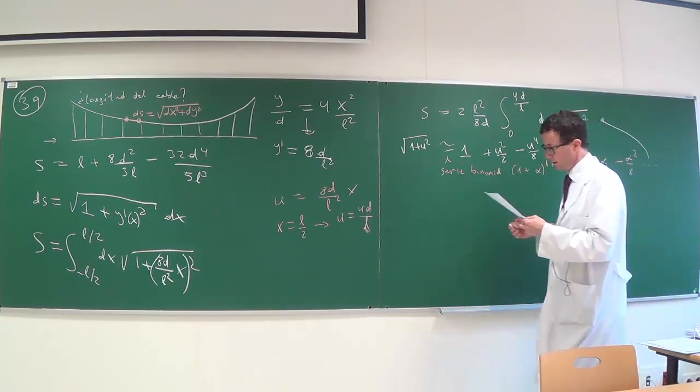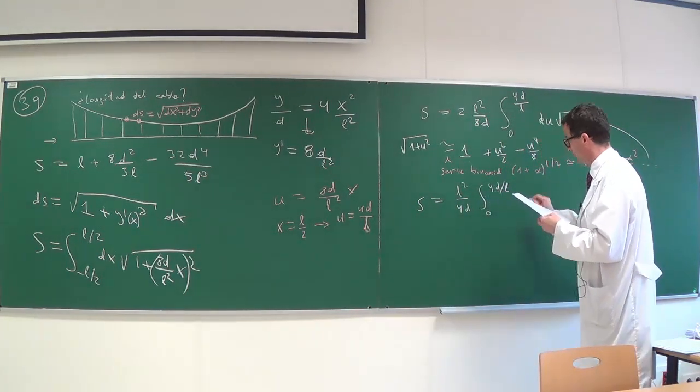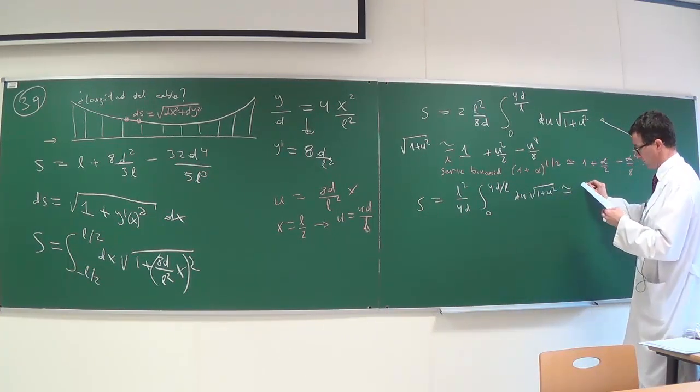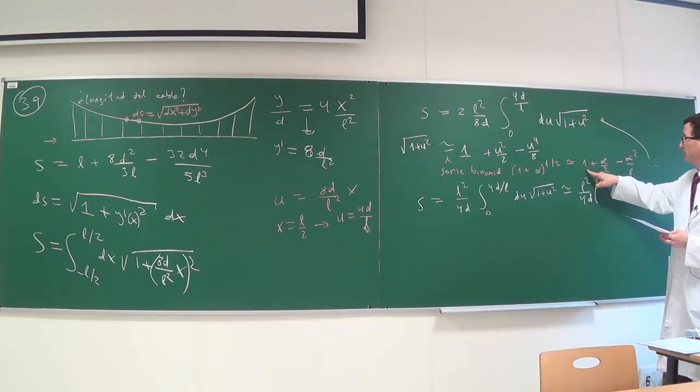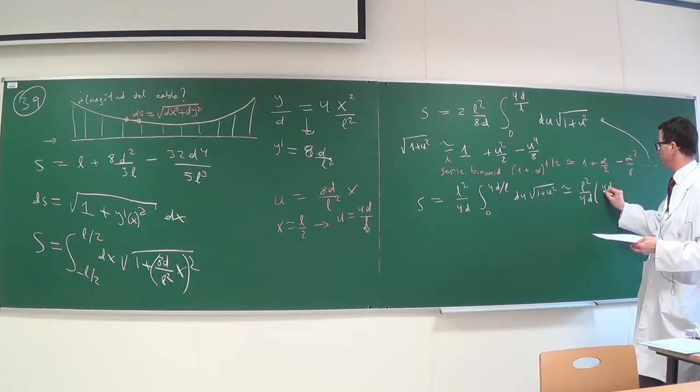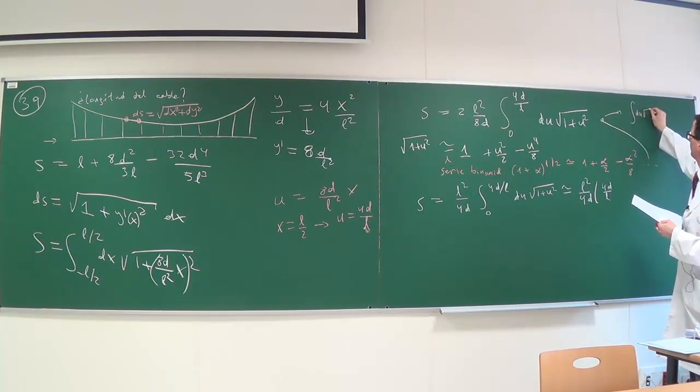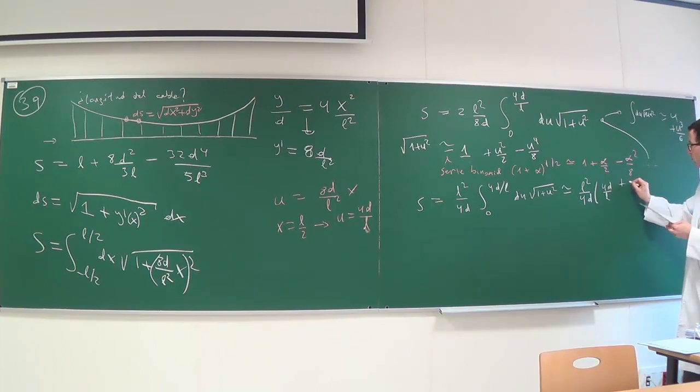So I'm going to expand the square root. We use the binomial series so that 1 plus U squared becomes expressed as 1 plus U squared divided by 2 minus U to the fourth divided by 8, etc. Where does this come from? Well, let's recall the binomial series. In this case, the exponent R is 1/2. So that 1 plus alpha raised to 1/2 becomes 1 plus alpha/2 minus alpha squared divided by 8, etc. Good, we substitute it above. Where is the square root? And it becomes S equal to L squared divided by 4D, integral between 0 and 4D divided by L, differential of U square root of 1 plus U squared.